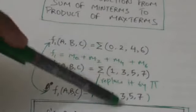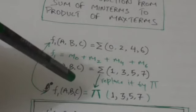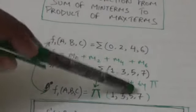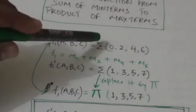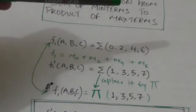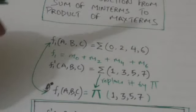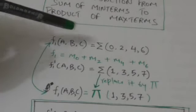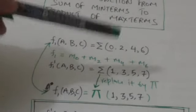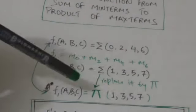So f1 of three variables a, b, c is now expressed in the form of product of maxterms. What we have done is replace the sigma symbol by the pi symbol, and written the subscript numbers of the minterms which are included in the complement of f1. These subscript numbers are written as they are when the function is expressed in the form of product of maxterms.